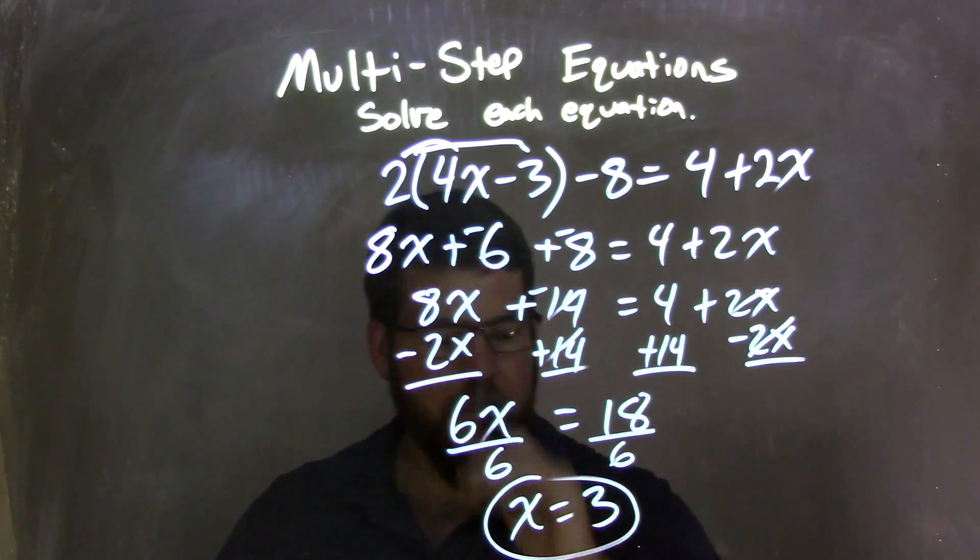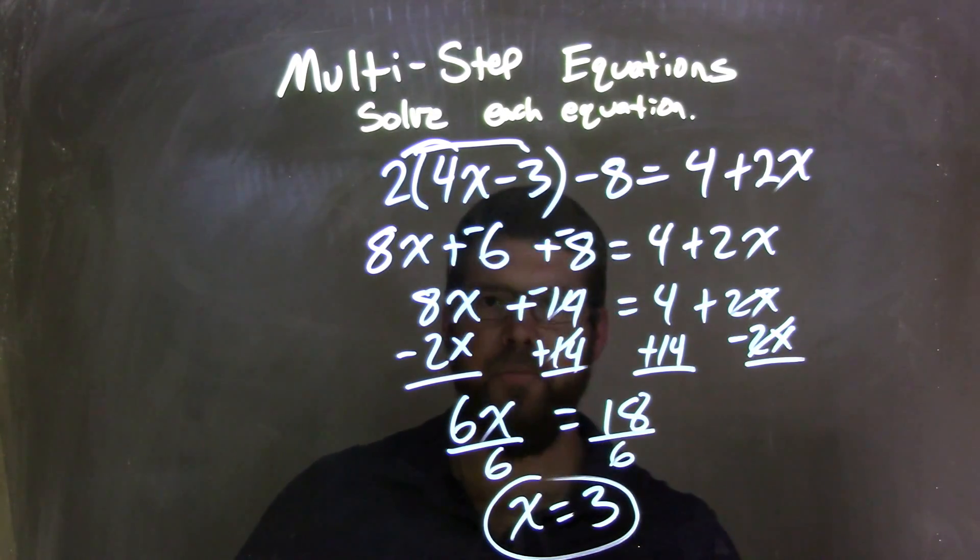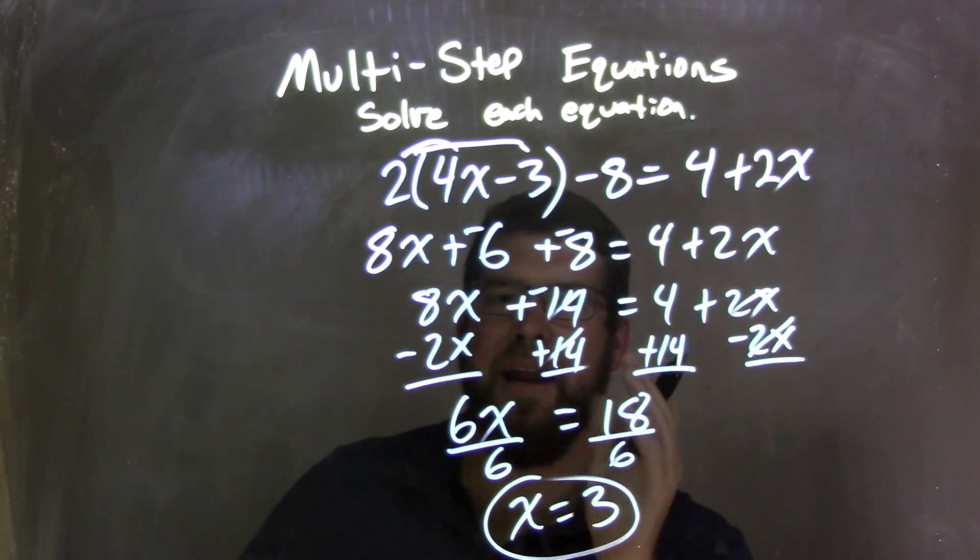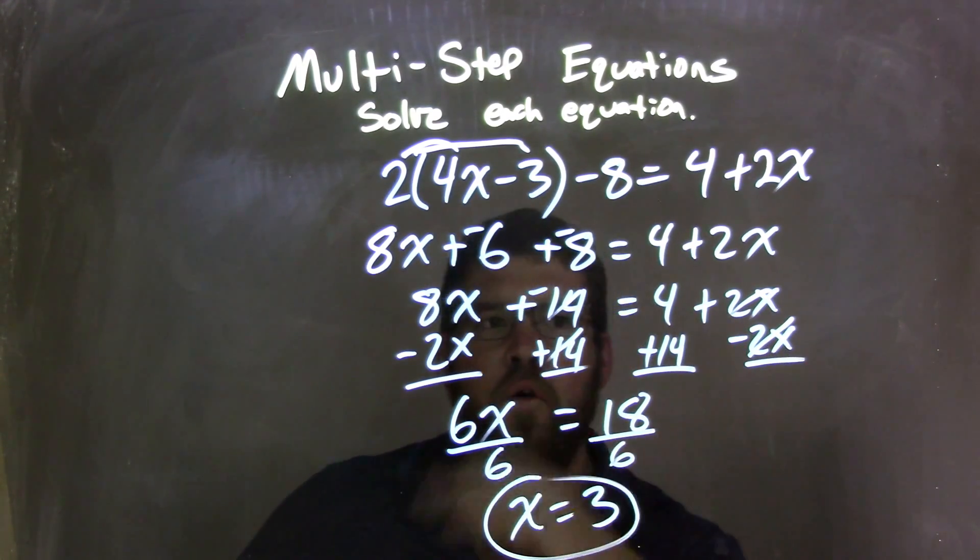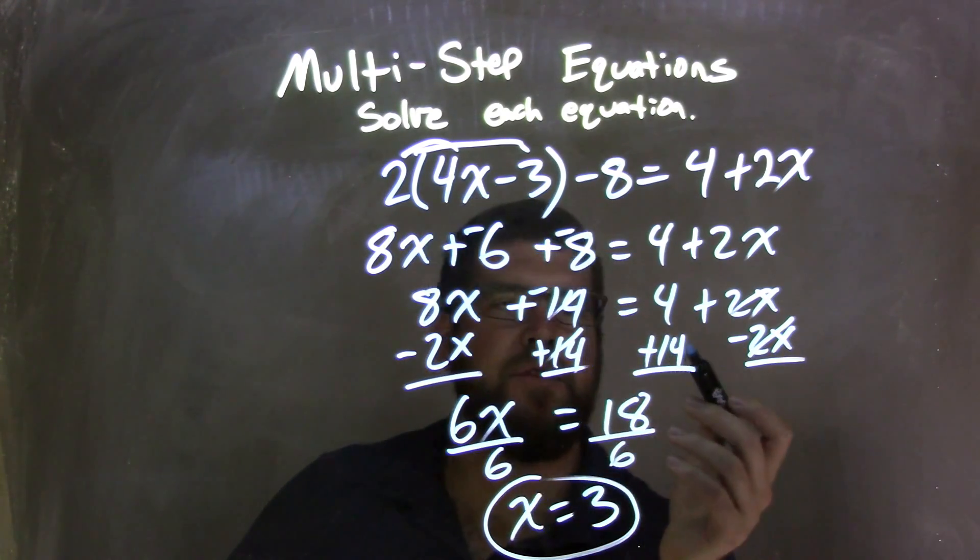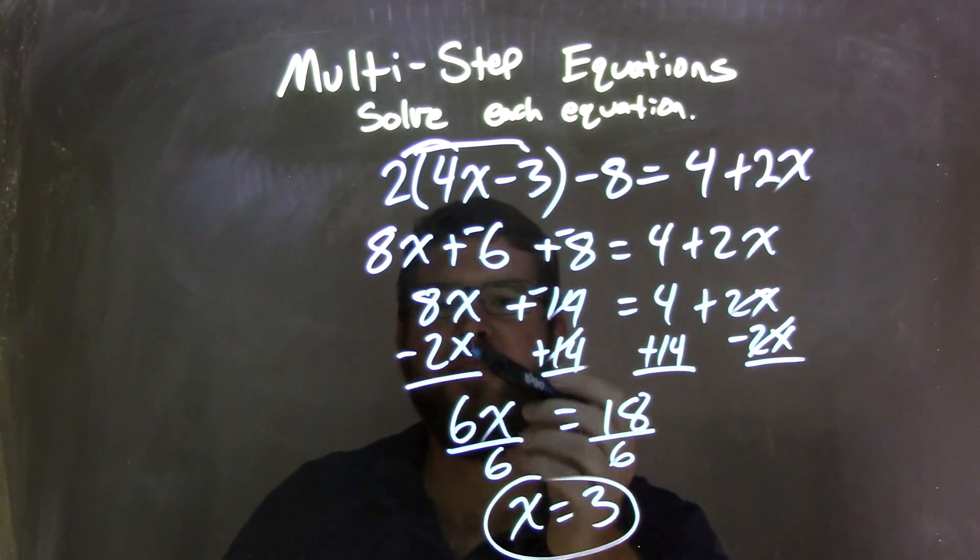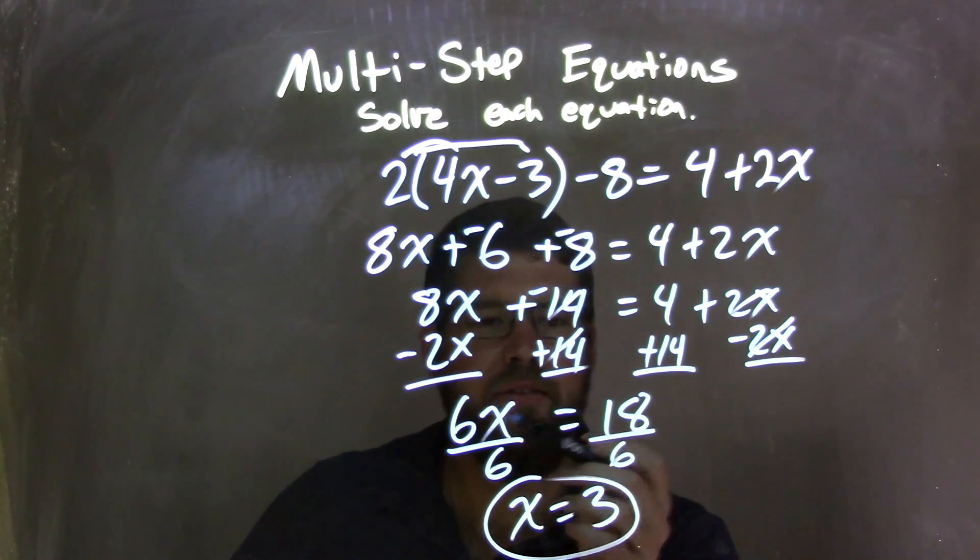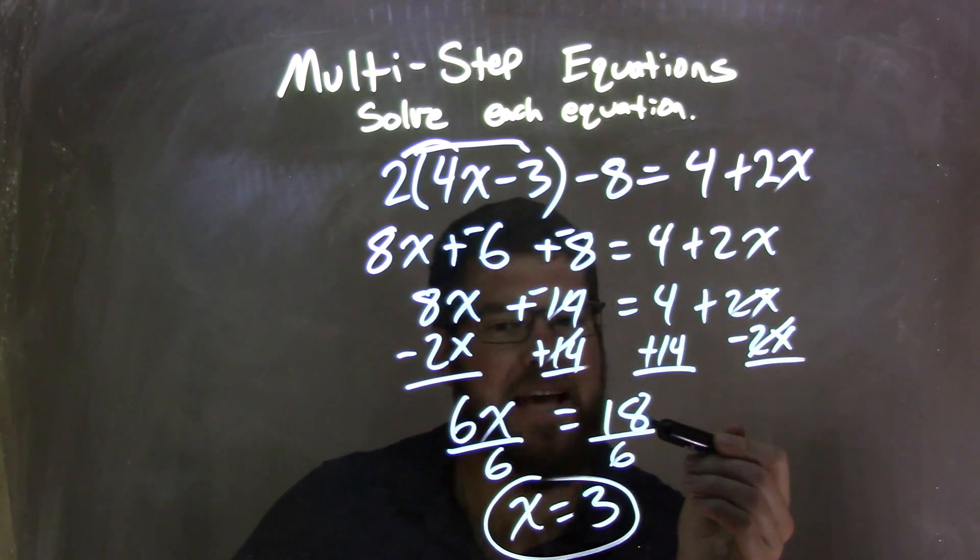So I brought all my, at that point, I couldn't simplify the variables on each side, I couldn't combine any like terms, so now I have to bring things over the equal side. So I have a negative 2x brought over here, and I brought the numbers over to the right, leaving me with 8x minus 2x, which is 6x, equals 4 plus 14, which is 18.